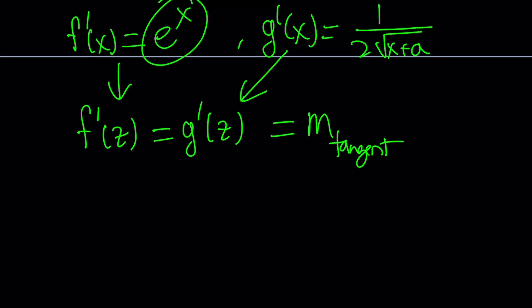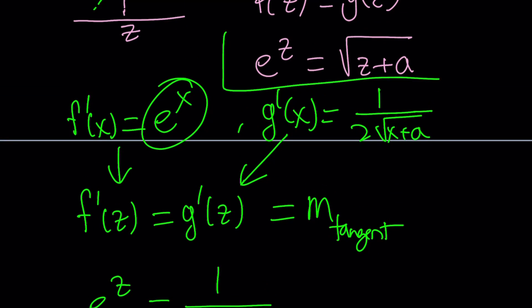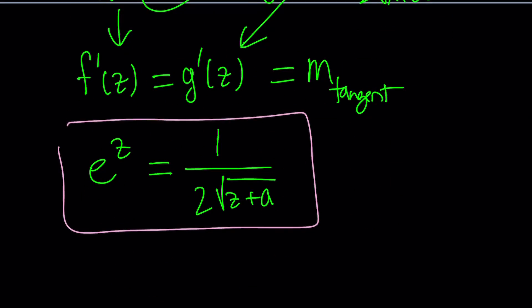So we're going to go ahead and plug it in and set them equal to each other. If you replace x with z in f prime, get e to the z. g prime gives you one over two times the square root of z plus a. Again, this is another equation with two variables, this looks complicated. But if you put these two together, this one and this one, then it's going to be a lot easier. So let's go ahead and do that next.